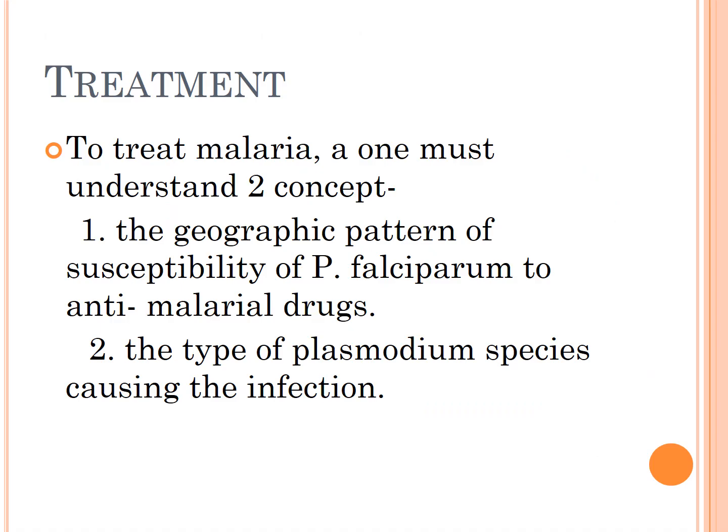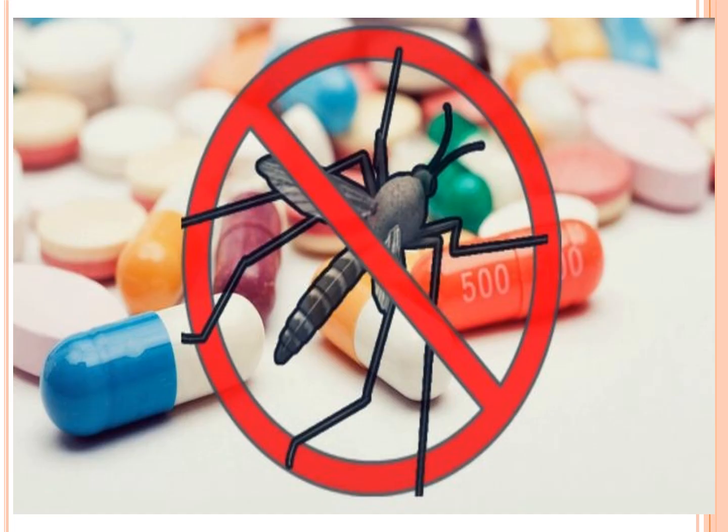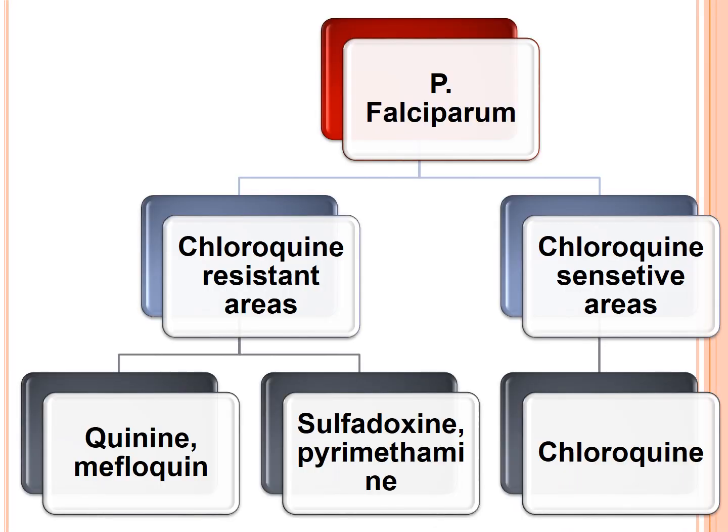To treat malaria, one must understand the geographic pattern of susceptibility of P. falciparum and identify the type of plasmodium species causing the infection. For chloroquine-sensitive areas, chloroquine is used. Other treatment options include quinine, mefloquine, sulfadoxine-pyrimethamine, and artemether-lumefantrine.